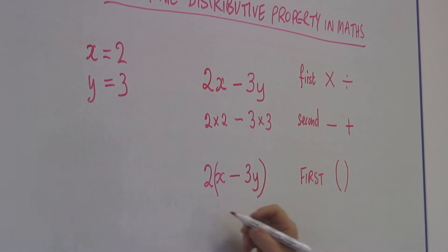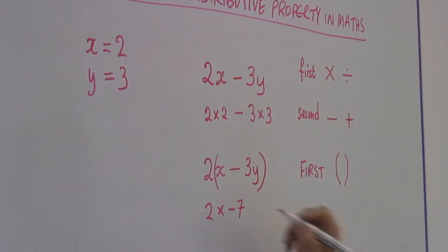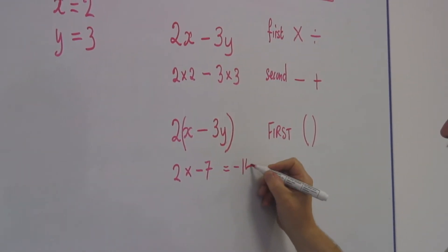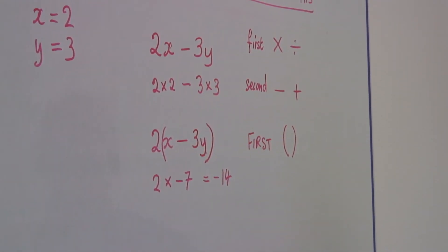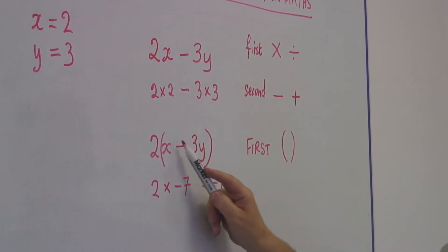So I get a number which is 2 times minus 7, which is minus 14. So I distribute. I have to do whatever is in the brackets first.